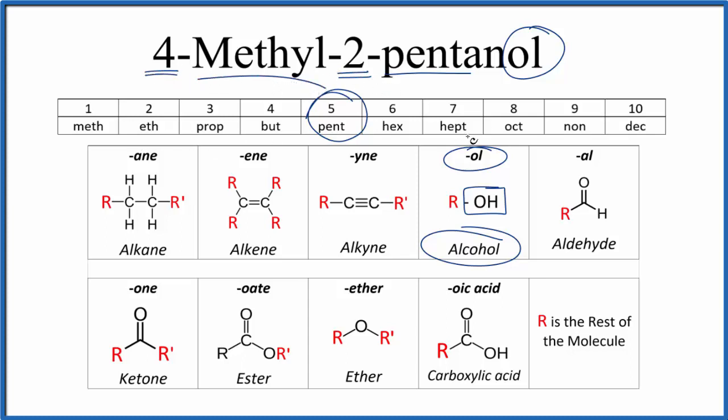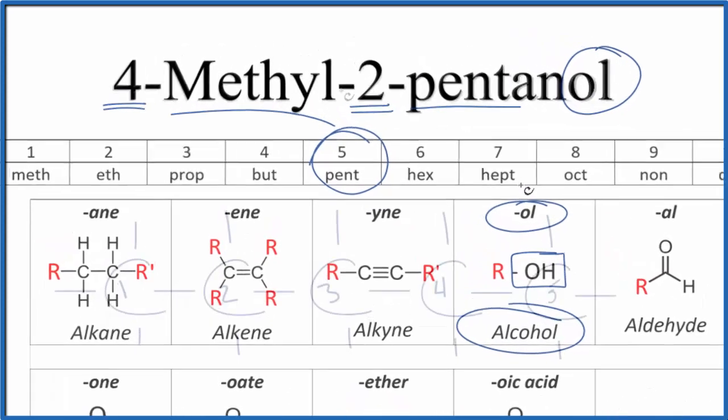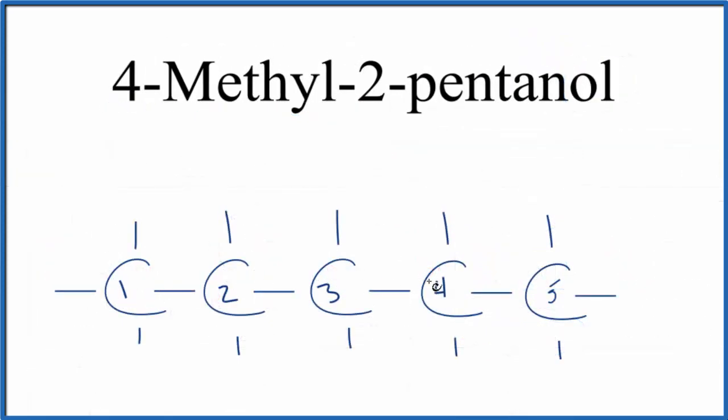Let's put a chain of five carbons up and number them. So we have one, two, three, four, five carbons. All of these lines go to hydrogens. That makes this pentane, an alkane. Let's put the OH group on the second carbon here. So right now we have 2-pentanol.